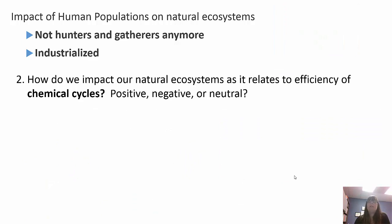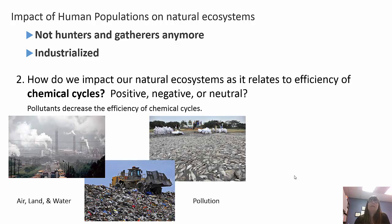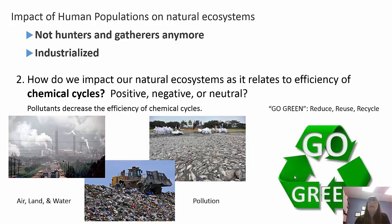In terms of chemical cycling efficiency, pollutants decrease that efficiency because we are adding pollution to all ecosystems — air, land, and water — decreasing the efficiency of these natural ecosystems. We should reduce, reuse, and recycle, or go green. We need to recycle everything we possibly can, reduce waste, and make simple changes like turning off the water when brushing your teeth or washing clothes in cold water.